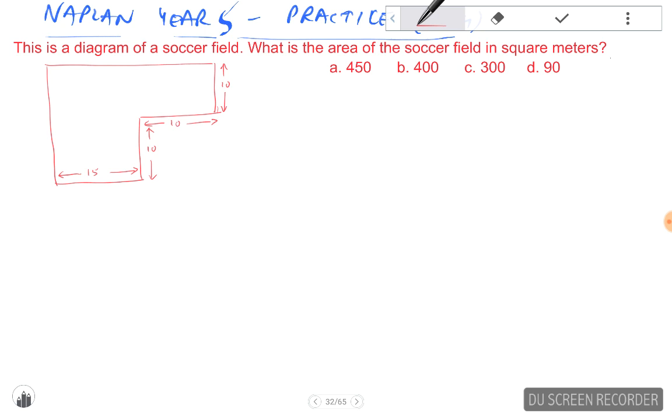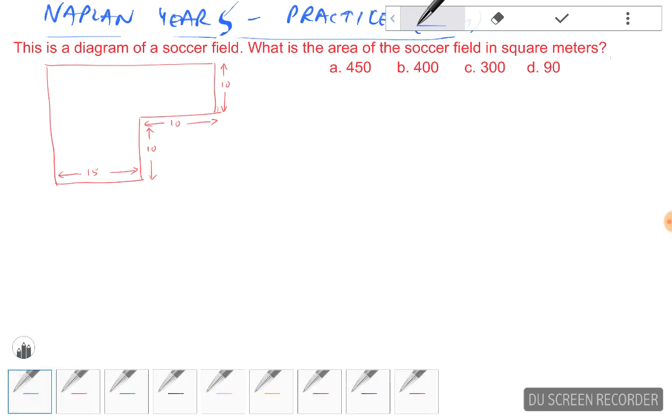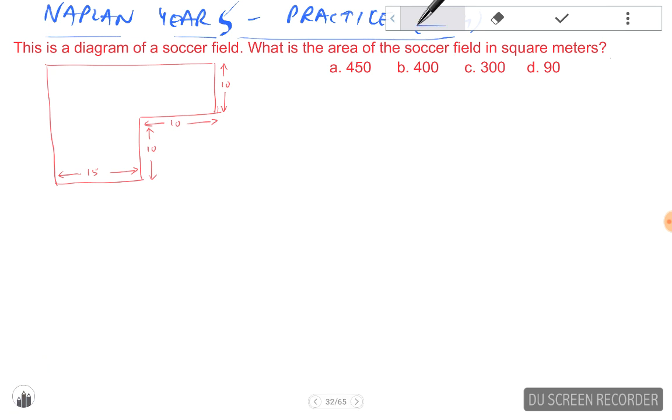So the first thing we'll put up on the screen is the formula for calculating the area of a rectangle, which is length multiplied by width.